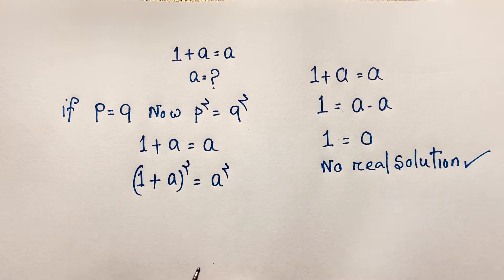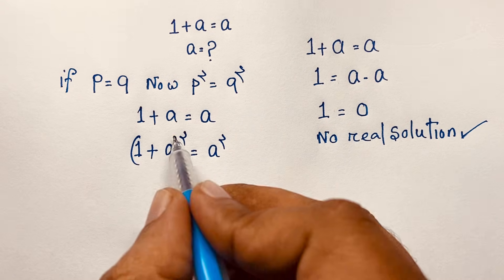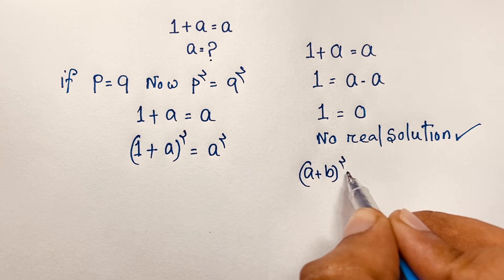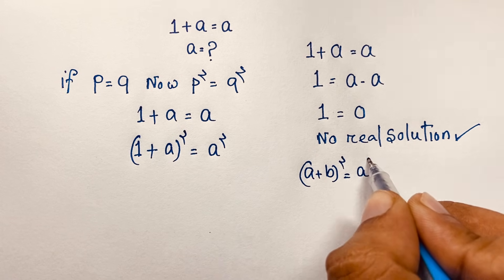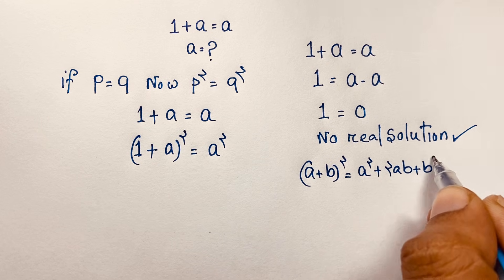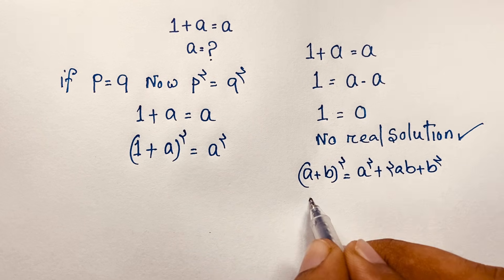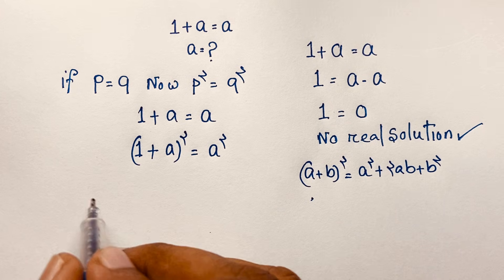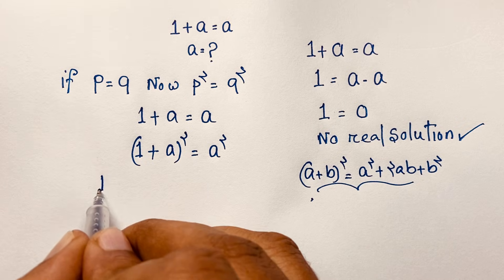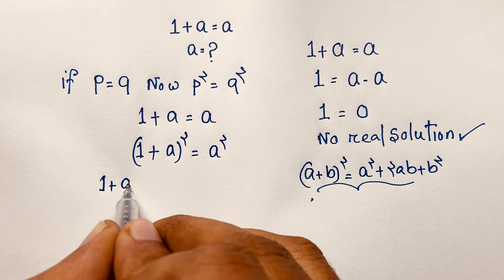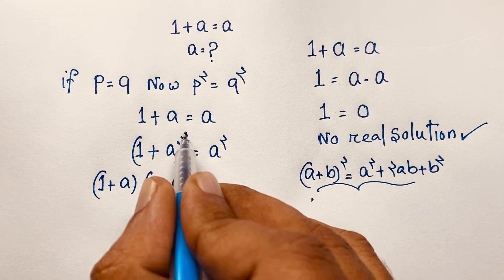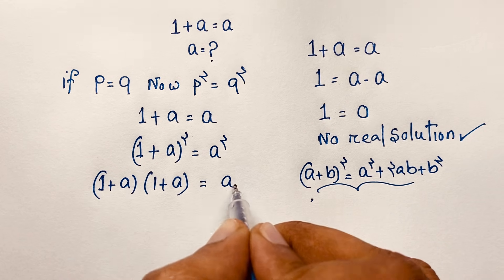Now recall the algebraic formula: (a + b)² is equal to a² plus 2ab plus b². We apply this to expand (1 + a)². You can also compute it directly as (1 + a)(1 + a), since this is (1 + a) to the power 2, equal to a².